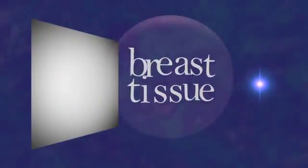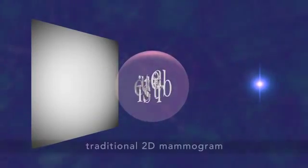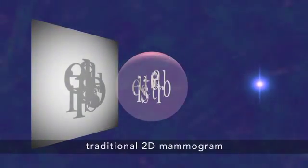Why is this a good thing? Well, a traditional 2D mammogram shows all the breast tissue at a glance. That means one feature can hide in the shadow of another. So it might look like there's cancer where there isn't any, or there could be a tiny cancer we just can't see.